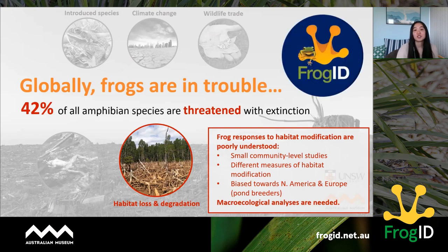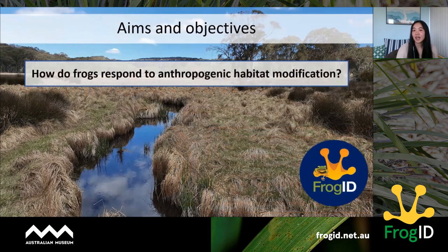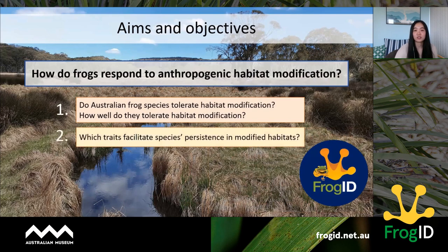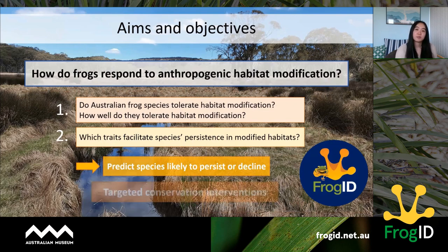The goal of my research was to use large-scale citizen science data from FrogID to find out how frogs are responding to human-driven habitat modification. I wanted to know: do Australia's frog species tolerate habitat modification, and if so how well? I also wanted to know which traits facilitate species persistence in modified habitat, so that we can ultimately predict which species are likely to persist and which are likely to decline — enabling targeted conservation interventions.